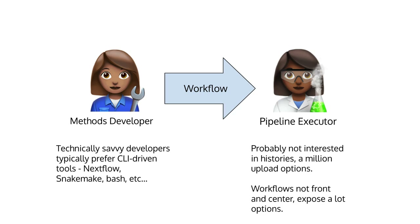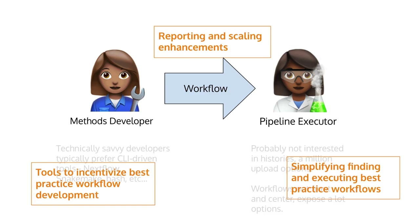But for these people, Galaxy is limited in many ways. For the method developer, many of these people are very technically savvy and prefer command-line-driven tools like Snakemake. For the pipeline executor, maybe Galaxy exposes too many options — histories, upload options, etc. And workflows aren't really front and center in the UI, and traditionally exposed a lot of extra options that aren't really needed, so it could be a little daunting.